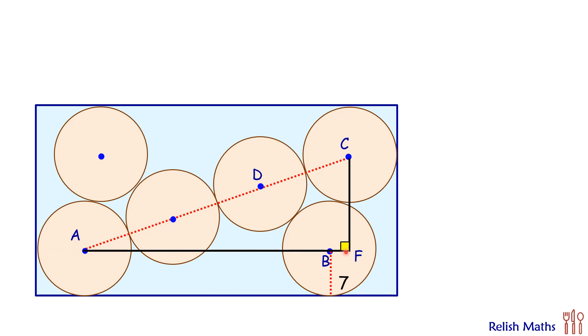So basically to get length and breadth, we need the value of CF and AF. Now here the hypotenuse, we already know, is 7 plus 7 plus 7, which is 21. So in this right angle triangle we have two variables. Basically we need one more right angle triangle to get the value of CF and AF.